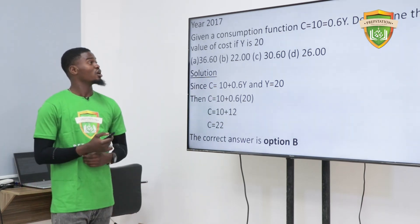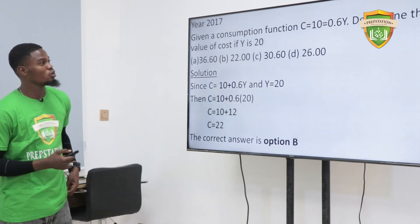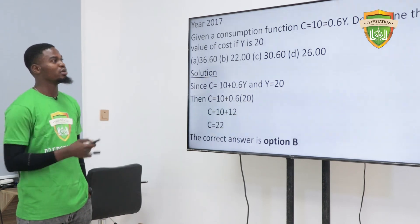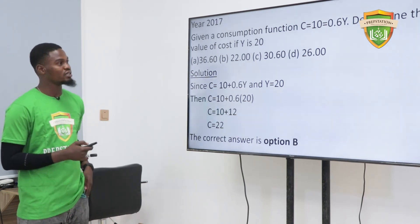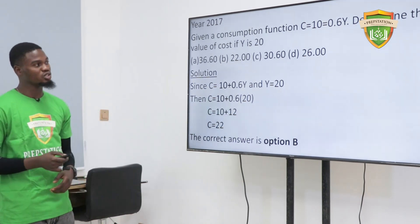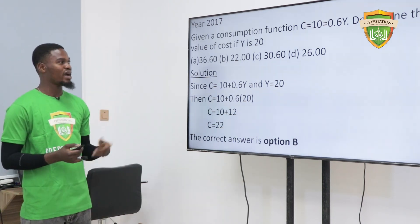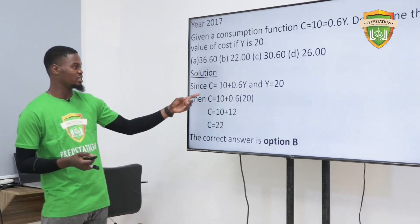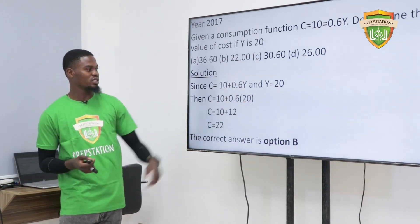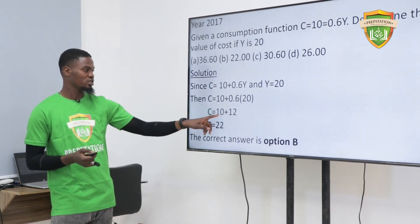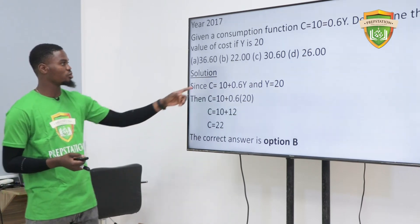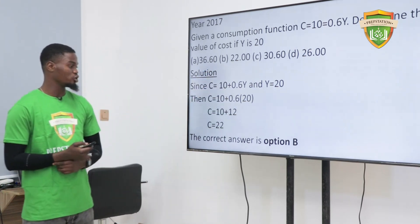Given a consumption function C equals 10 plus 0.6y, determine the value of cost if y is 20. What we need to do is substitute the value of y, which is 20, into the equation. So 0.6 times 20 gives you 12. Then 10 plus 12 gives you 22. The appropriate answer for this question is option B.